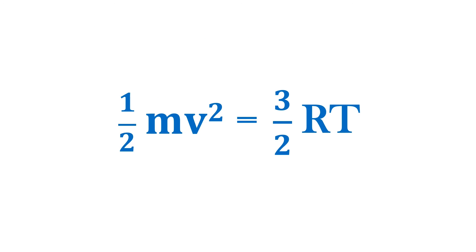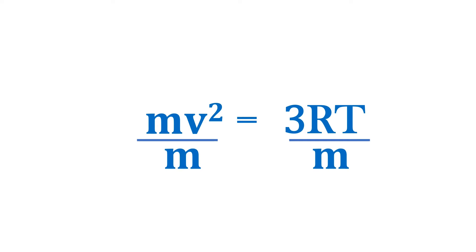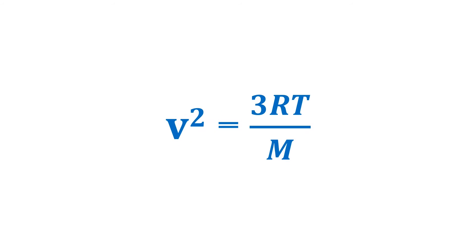The first thing we'll note is that the halves cancel. Next, divide both sides by the mass and the mass will cancel on the left side. Note, I'll change the lowercase m for the mass into an uppercase M. This signifies that I'm referring to the molar mass of the gas in kilograms per mole.